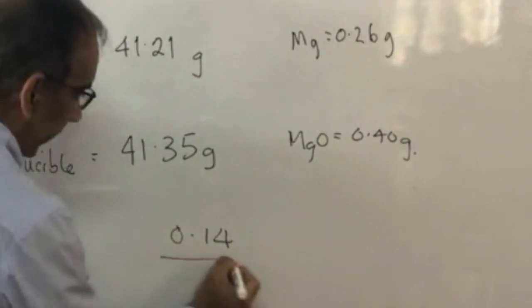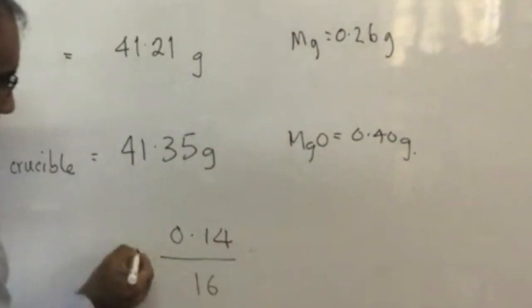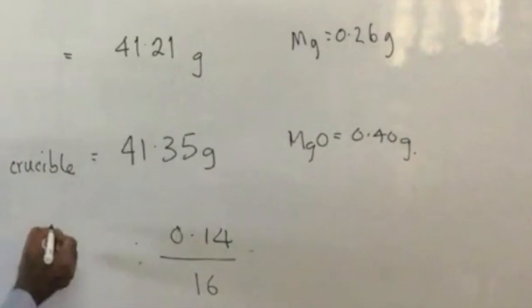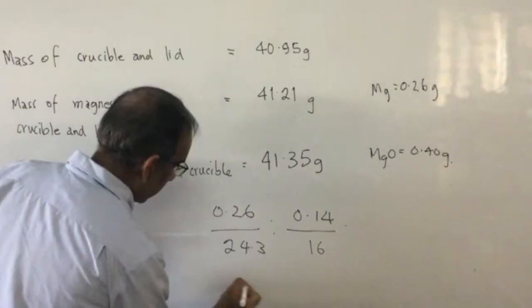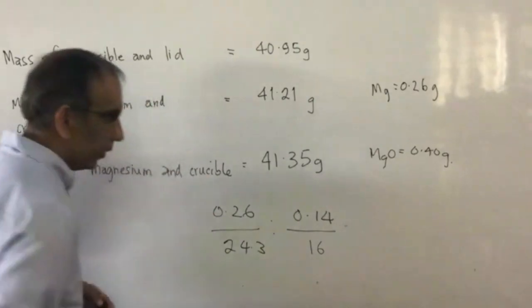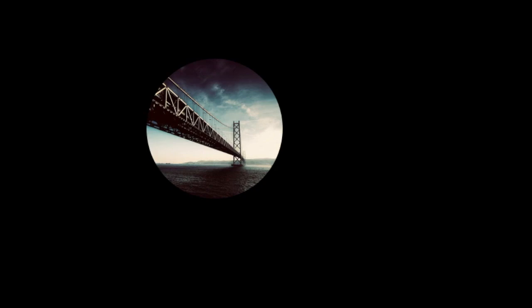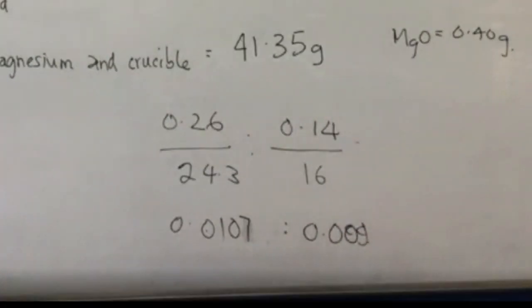Mass in grams divided by the relative atomic mass of oxygen, which is about 16. That's one thing in the empirical formula. And the other thing in the empirical formula is 0.26 divided by the atomic mass of magnesium, 24.3. This here, what number you get and that there, what number you get, share with me please. 0.0106 or 07. It's roughly 0.009.